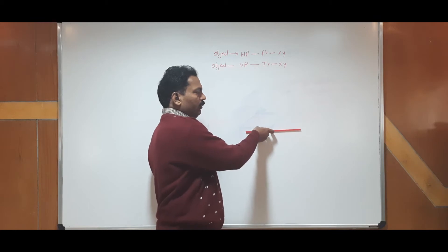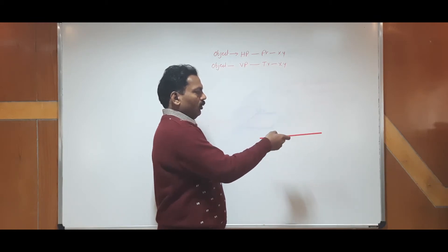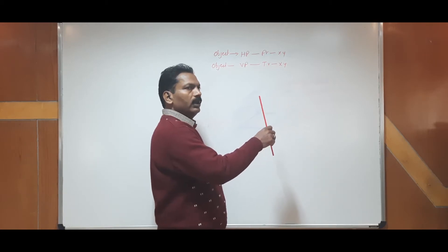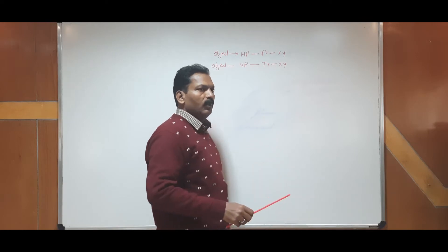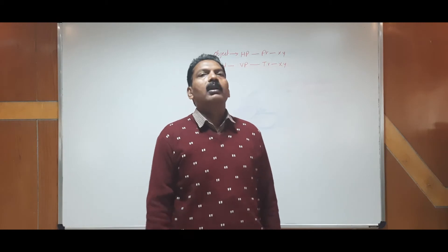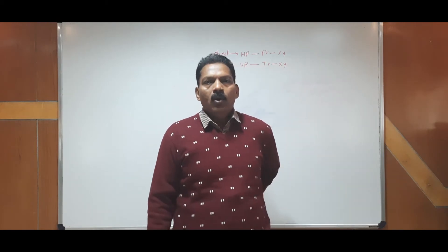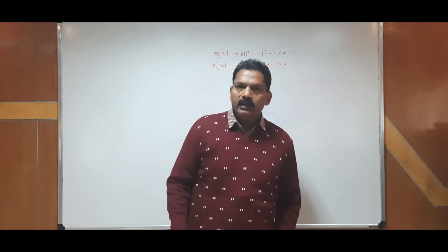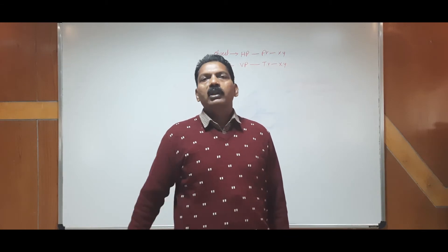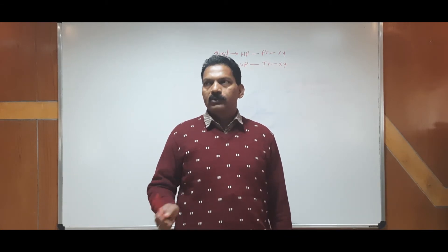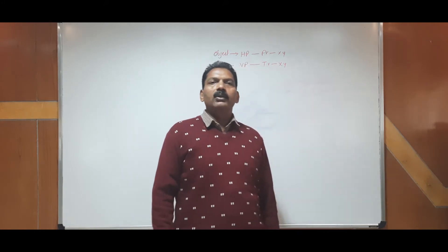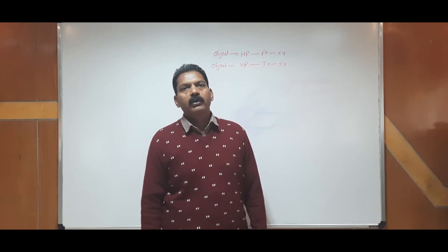When the line is in VP or parallel to VP, we always get the true length in front view. The concept is: when the line is in VP or parallel to VP, we have the true length in front view. The final conclusion from last session was: when the top view is parallel to XY, the front view will show the true length.